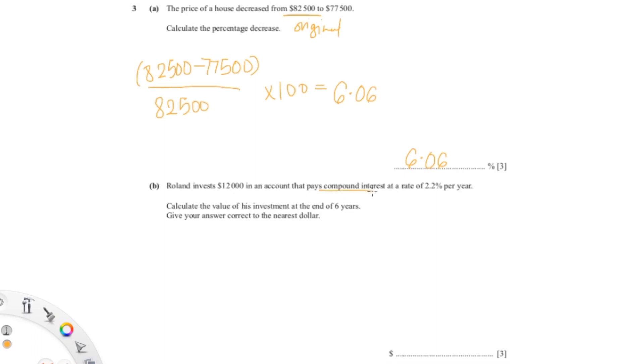They're asking for compound interest, so the formula for compound interest is A equals P times one plus r to the power n. We know that 2.2 is the rate of interest, so that's r, and 12,000 is the initial value, which is P. They're asking for the nearest dollar, so we'll have to round it at the end. And we know that n, which is the number of years, is six.